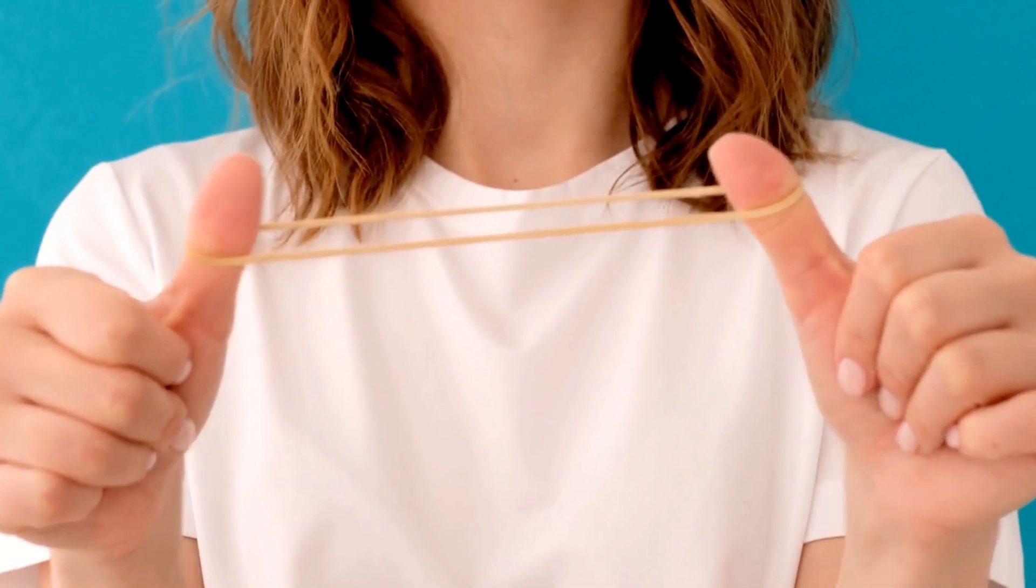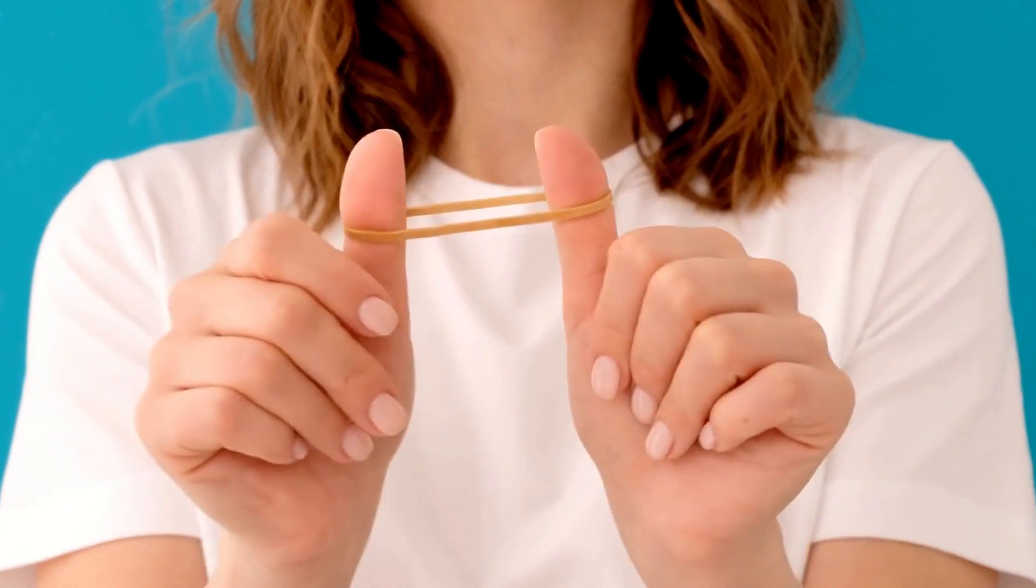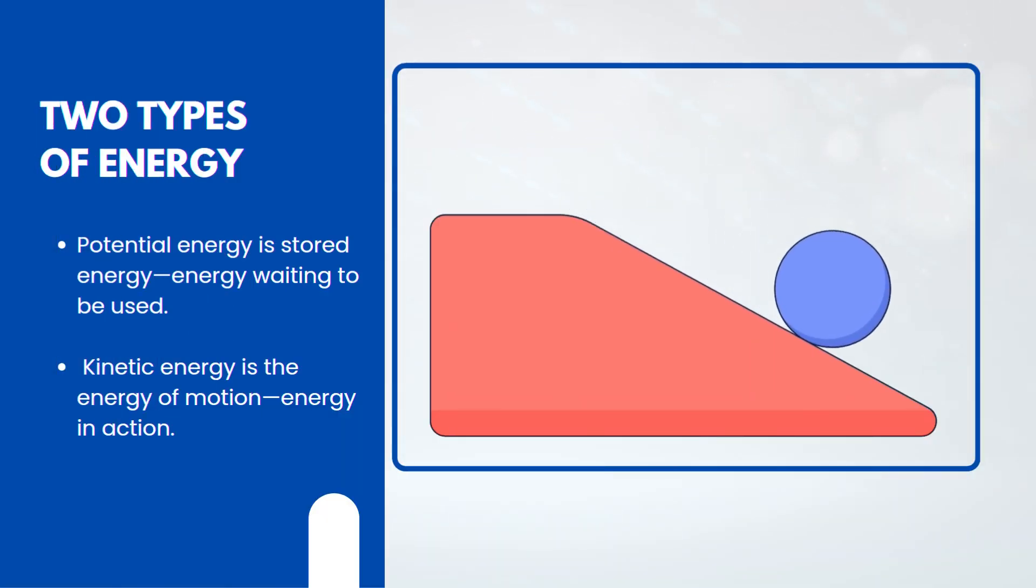Now that we know what energy is, let's look at its two main forms. Energy usually shows up in two main forms: potential energy and kinetic energy.